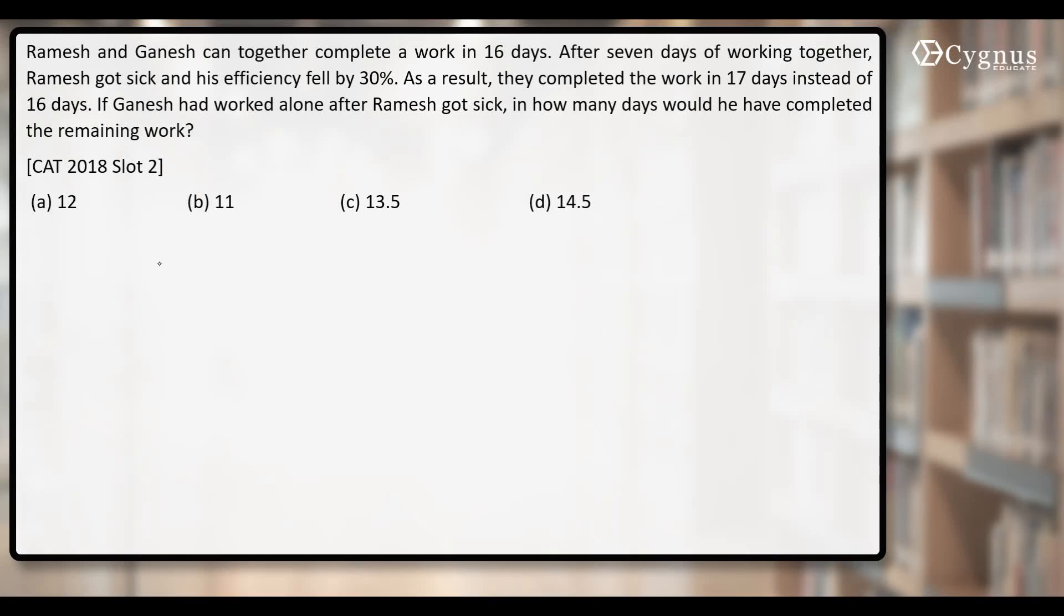Hi, this is a question of GATT 2018 slot 2 based on efficiency. It's a very good question. Let's try to look at this question in a different way. Ramesh and Ganesh can together complete a work in 16 days. That means both of them are going to contribute for 16 days. Let's take it like this.